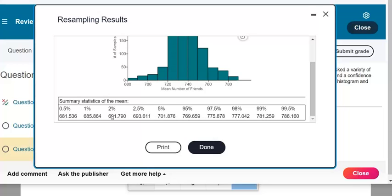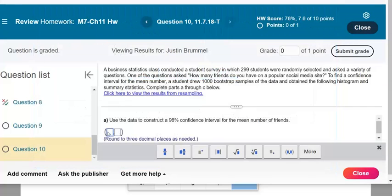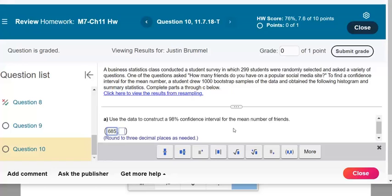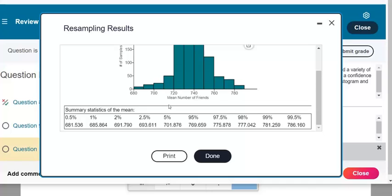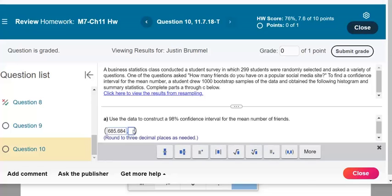So if you want a 98% confidence interval, then you want to have 1% for the left tail and 1% for the right tail. So 685.864 was the left tail at 1%. And then 99% means we have 1% to the right. So 781.259 goes there.